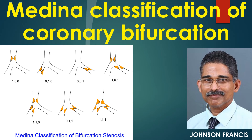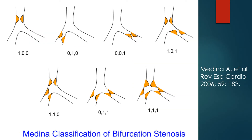Medina classification is a popular classification of coronary bifurcation lesions. It involves assigning a binary value — 1 or 0 — to each of the three components of a bifurcation.